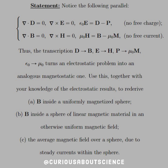Therefore, the transcription D goes to B, E goes to H, P goes to μ₀M, and ε₀ goes to μ₀ — this turns an electrostatic problem into an analogous magnetostatic one. Use this, together with your knowledge of the electrostatic results, to re-derive: A, the magnetic field inside a uniformly magnetized sphere; B, the inside of a sphere of a linear magnetic material in an otherwise uniform magnetic field; and C, the average magnetic field over a sphere due to the steady currents within the sphere.